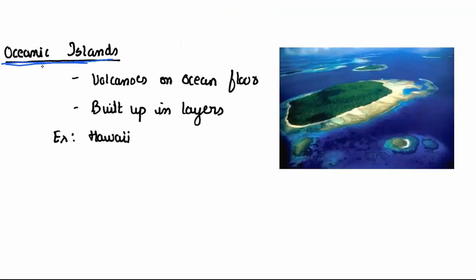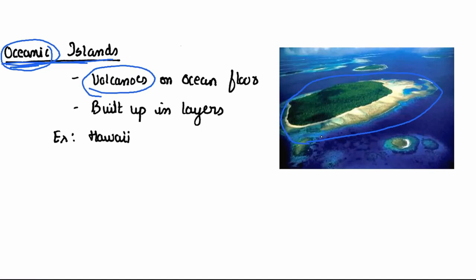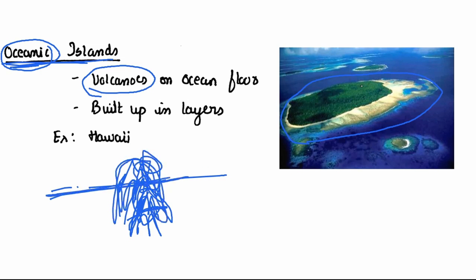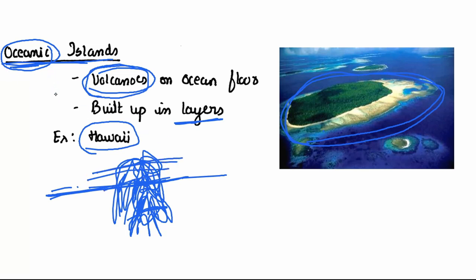Next are Oceanic Islands. Whenever you see 'oceanic islands,' think of volcanoes. They are formed due to volcanic eruptions inside the ocean. The volcanoes erupted and built up in layers until they emerged out of the ocean. Hawaii Islands is an example of oceanic islands — formed by volcanic eruptions building up in layers.